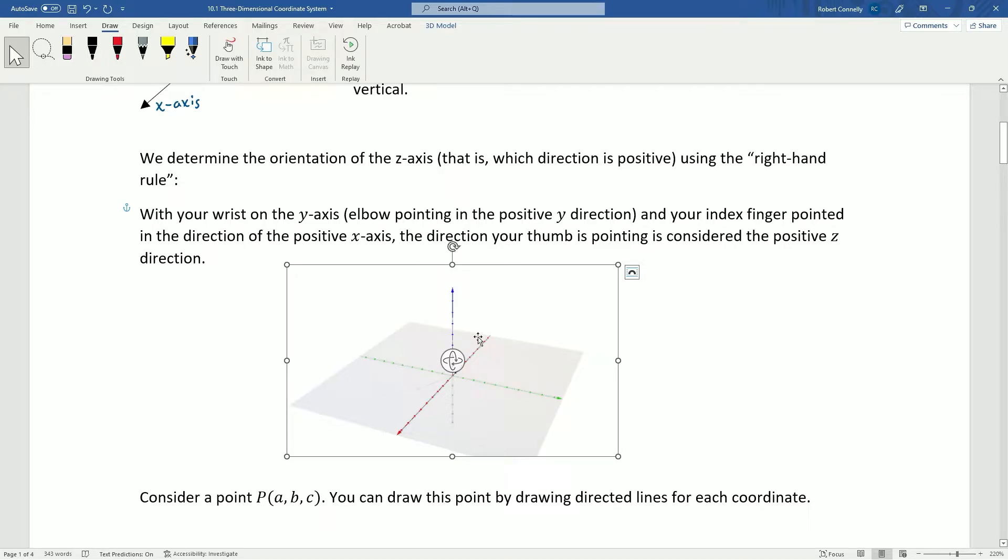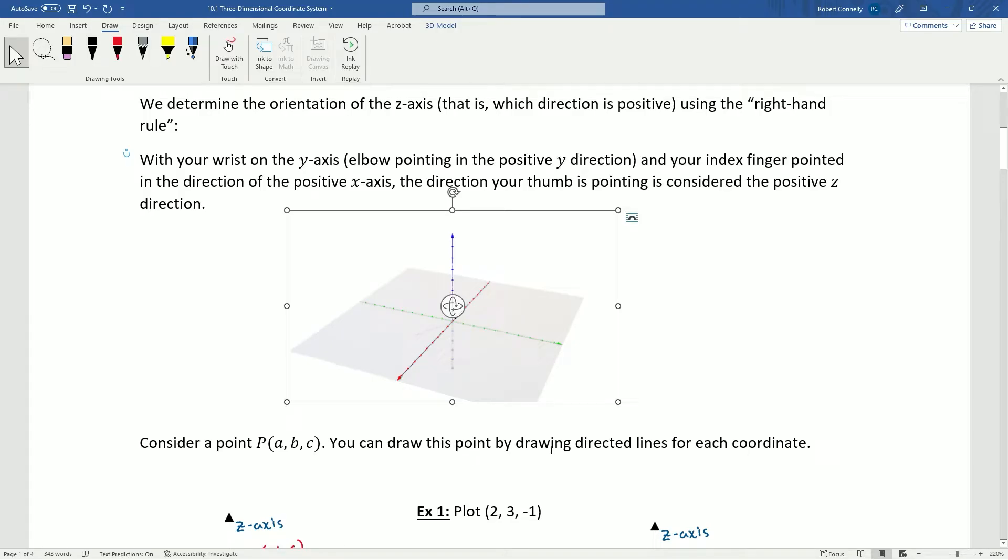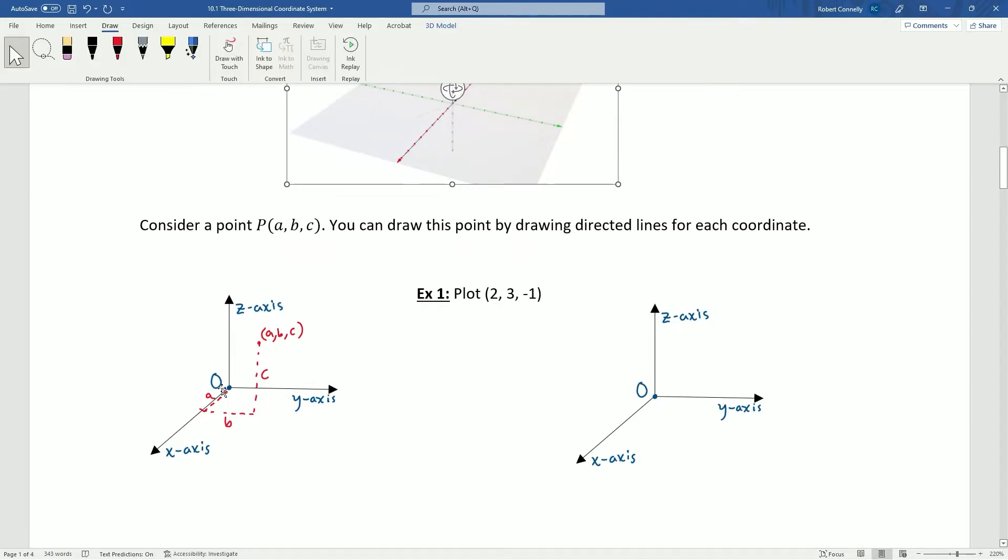Now, of course, most of the time we don't have the time to deal with 3D model just to visualize something in the 3D space. So we have to figure out kind of a way to draw some points that helps us visualize them a little bit. So consider a point ABC. We can draw this point by drawing what we call directed lines for each coordinate. So in general, what that means is you start at the origin, and you draw a dotted line along the X axis until you go out the distance of A.